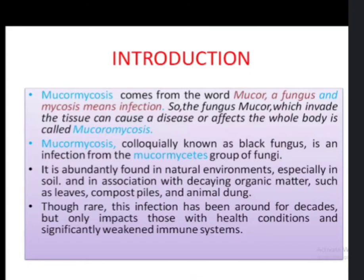Mucormycosis comes from the word mucor, a fungus, and mycosis means infection. So the fungus mucor, which invades the tissue and causes disease or affects the whole body, is called mucormycosis. Mucormycosis, colloquially known as black fungus, is an infection from the mucormycetes group of fungi, and it is abundantly found in the natural environment, especially in soil and in association with decaying organic matter such as leaves or animal dust.